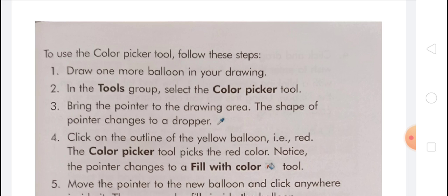The fill with color tool lets you fill color in any closed shape or area in your drawing. To use the fill with color tool: first, draw a closed shape, then select the fill with color tool in the tools group. Second, in the colors group select the color 1 button, then select any color in the color palette. Third, move the pointer to the drawing area and click inside the shape — the chosen color fills inside the shape.